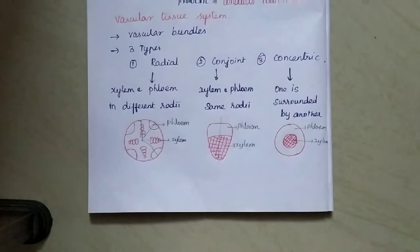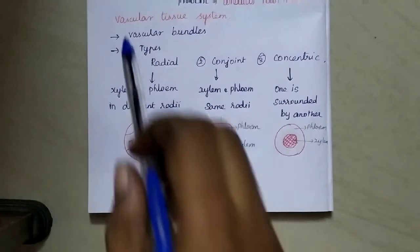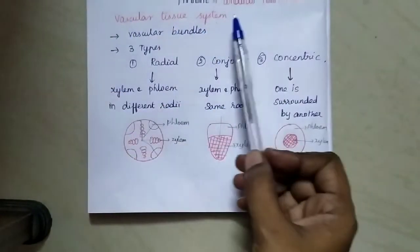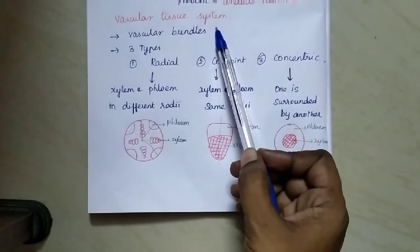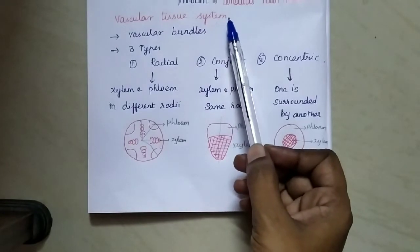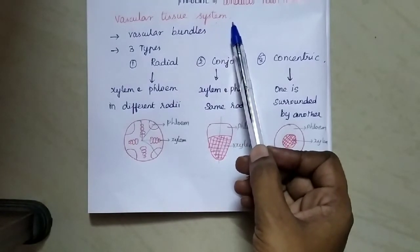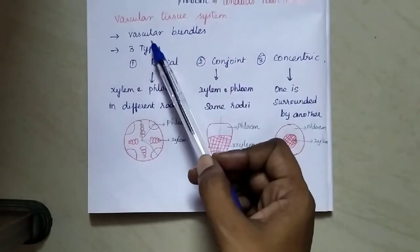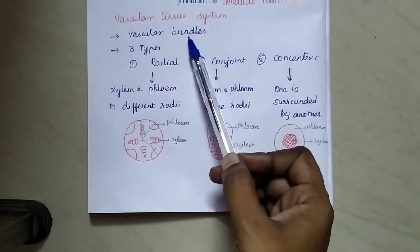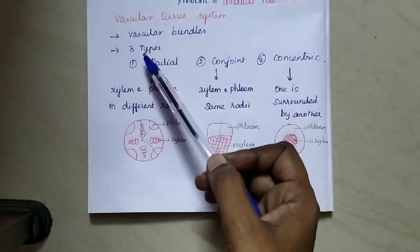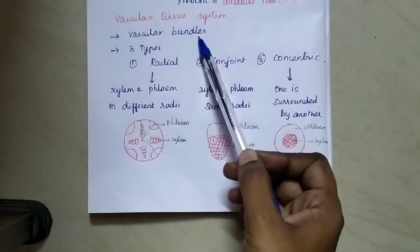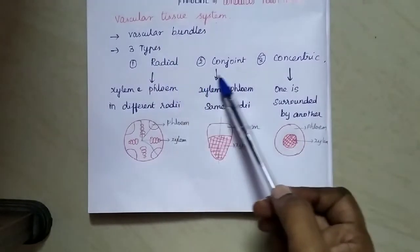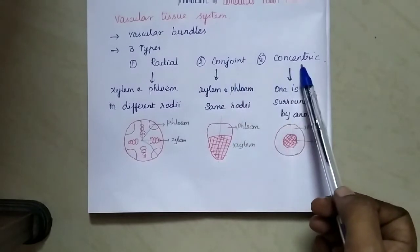Now we are going to study in detail about the vascular tissue system. This vascular tissue system is sometimes arranged in the form of bundles, and for this reason it is said to be vascular bundles. Vascular bundles are of three types: one is radial, conjoined, and concentric.